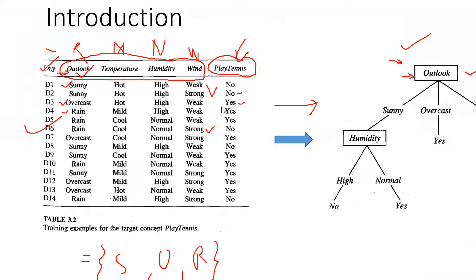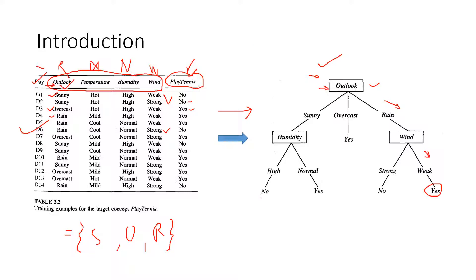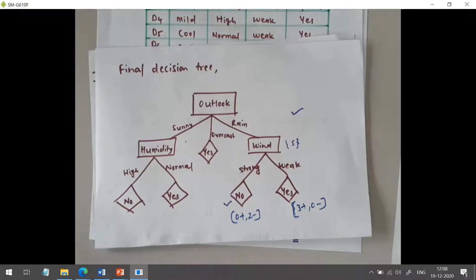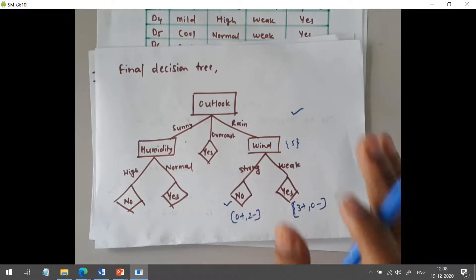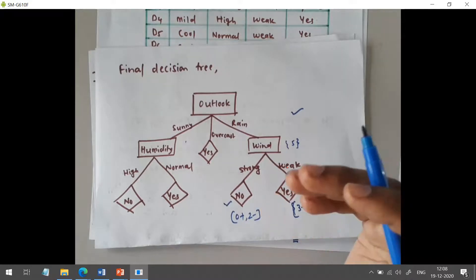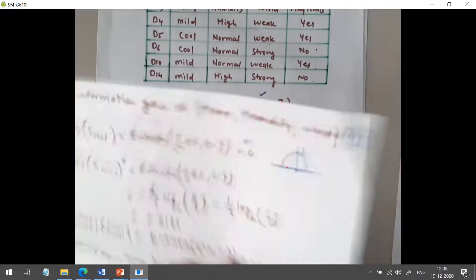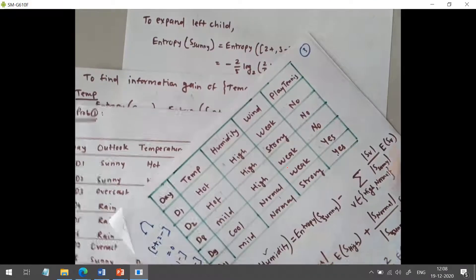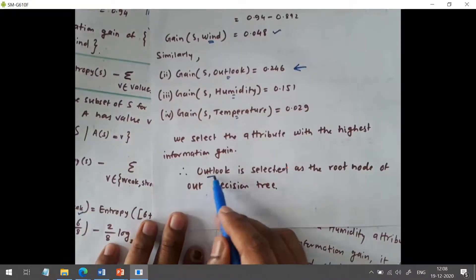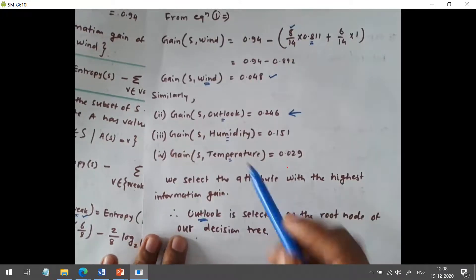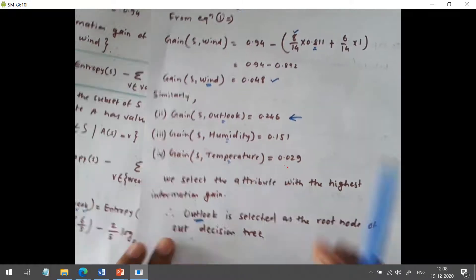This is how we solve this problem. It is a lengthy problem taking 15 to 20 minutes, with weightage around 10 to 12 marks. This problem was very lengthy, so likely they will ask only to find which attribute is used at the root level for 6 or 8 marks. We started with the entropy formula, then found gain for wind, outlook, humidity, and temperature, and decided that outlook is selected as the root node.